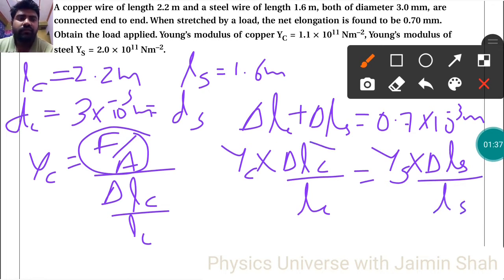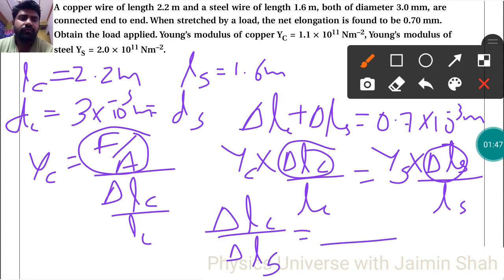See, now we don't have this value. So by this equation we can find delta Lc upon delta Ls. So whatever value we get, we can put in the other equation. This is our another equation.